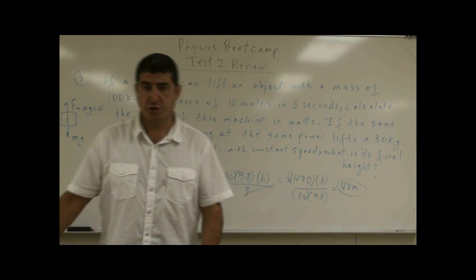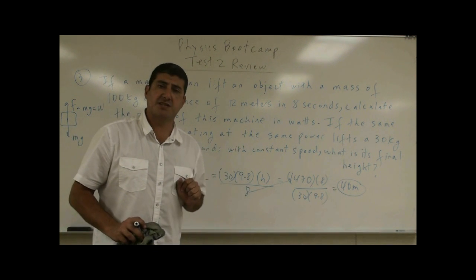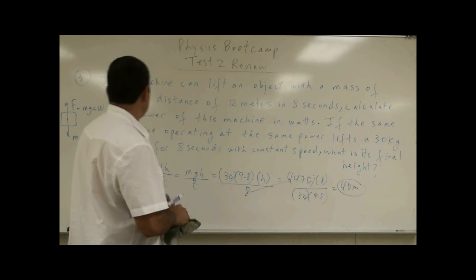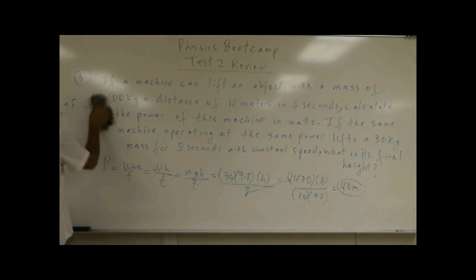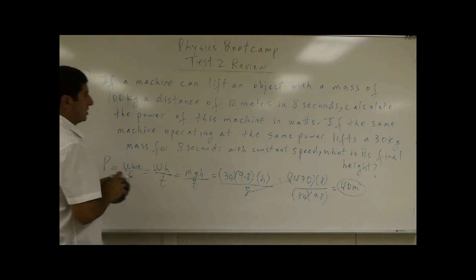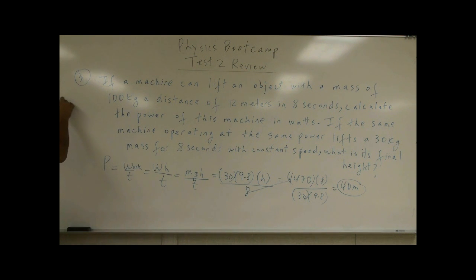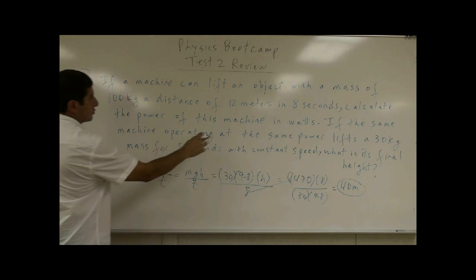Now, the easier way that we could have done it, we could have said, well, since the mass is the only thing that's different, and the time is the same, that means it would be a ratio of the masses. You could do a kind of a ratio thing. You say, okay, what's the ratio of 100 kilogram to 30 kilogram?